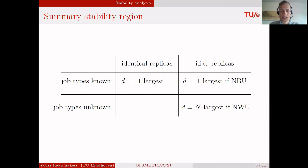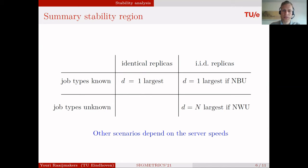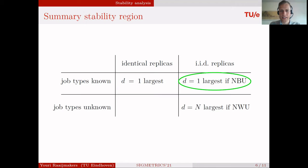In all other scenarios — for example, known job types with IID replicas that are new-worse-than-used — the largest stability region depends on the server speeds. In the remainder of this talk, I will go into detail on the scenario of IID replicas, new-better-than-used job sizes, and known job types.